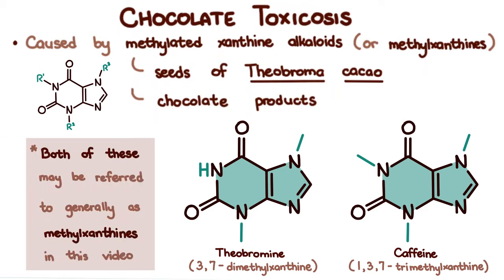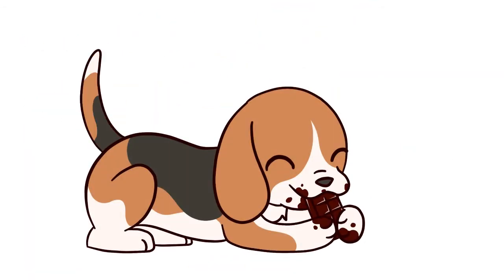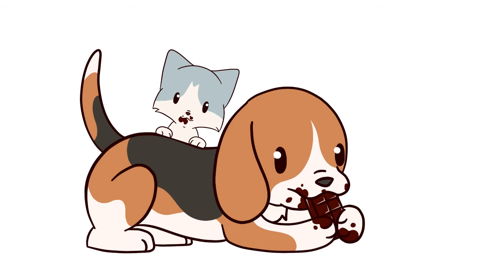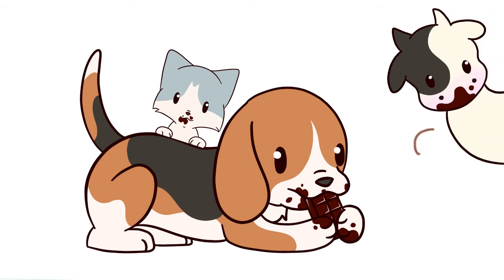Both of these may be referred to generally as methyl xanthines throughout the video. Often, dogs present with chocolate toxicosis, but cats are also susceptible, and so are livestock animals that consume mulch made from cocoa bean hulks.